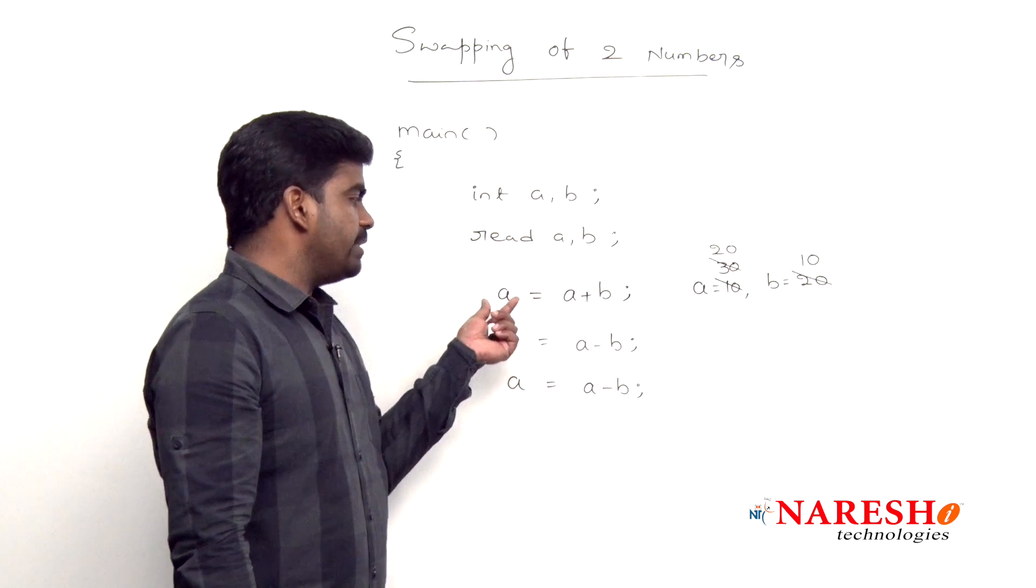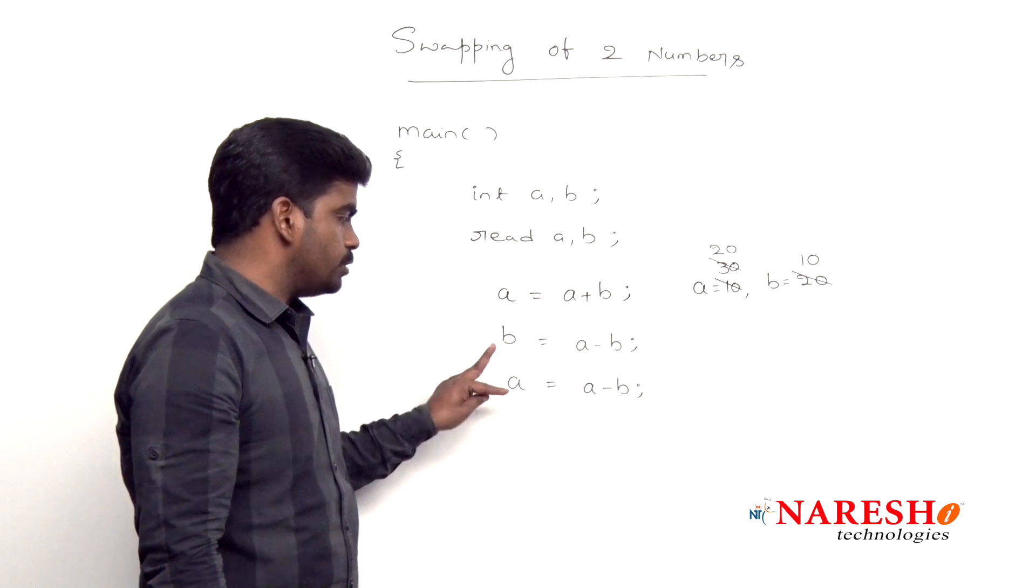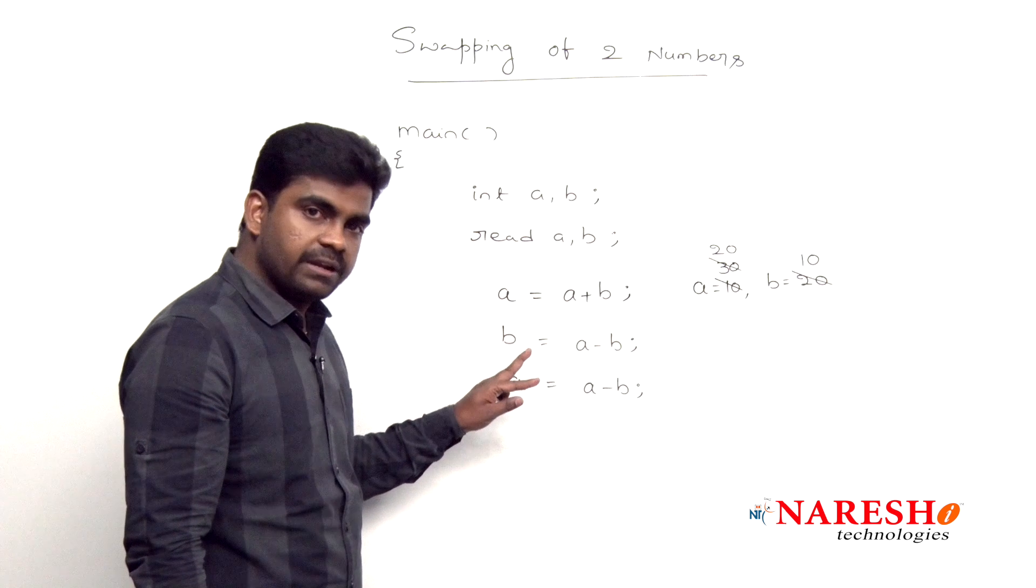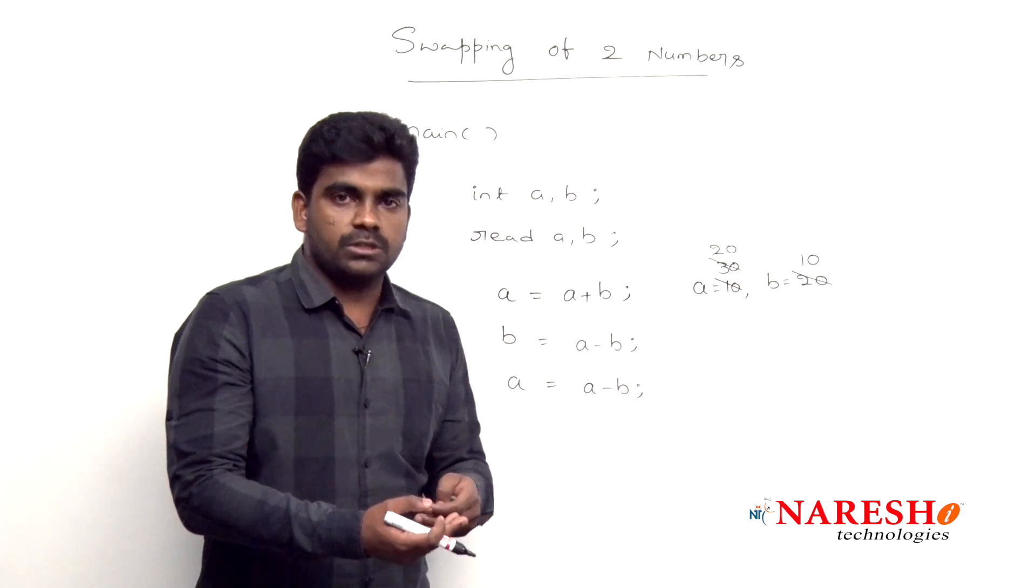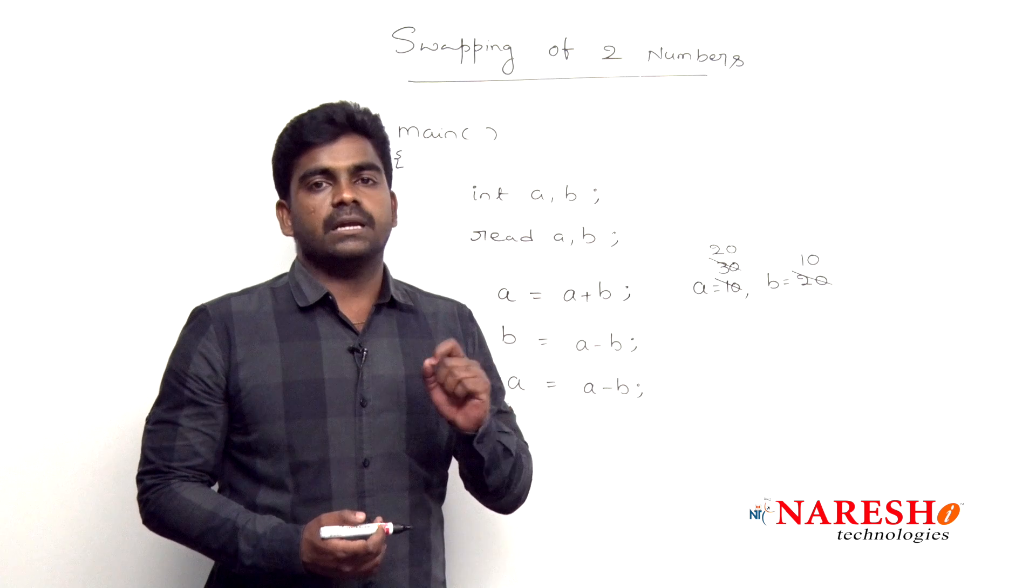Instead of using the variable a, first you can store into b also. Based on these two steps you should interchange. The same logic executes and you can swap the two numbers without using temporary variables.